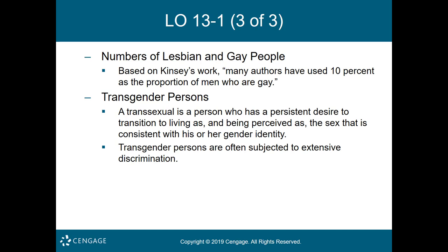Another well-known transgender person is Caitlyn Jenner, formerly known as Bruce Jenner, an American television personality and Olympic gold medal winner. Bruce Jenner was formerly married to Kris Jenner and appeared on the reality television series Keeping Up with the Kardashians. Caitlyn has been called the most famous openly transgender woman in the world. The term transgender covers a variety of different people whose appearance and behaviors do not conform to gender roles ascribed by society.